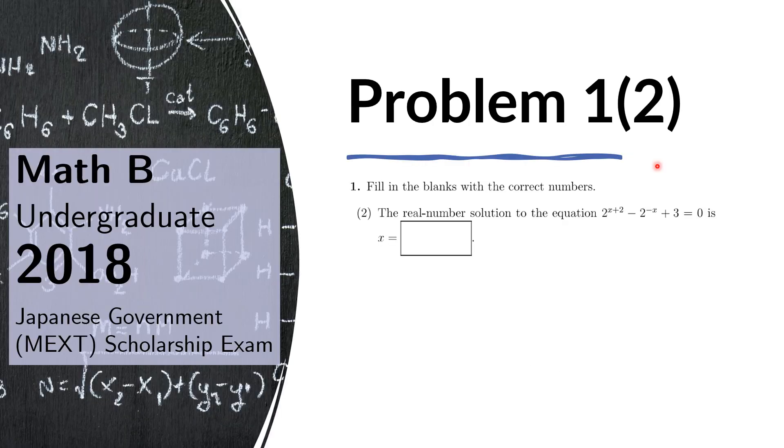Problem 1, part 2. The real number solution to the equation 2^(x+2) - 2^(-x) + 3 = 0 is x equals blank.